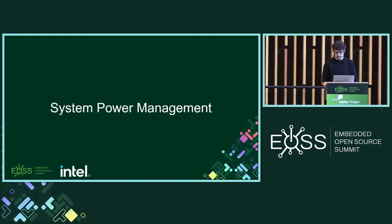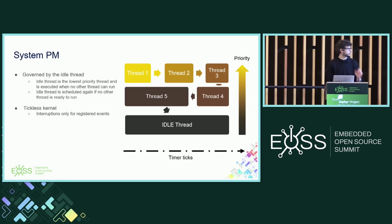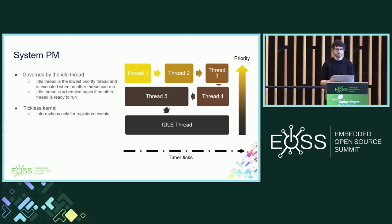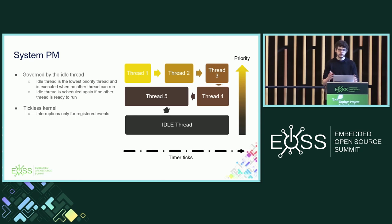Let's start with system power management. To understand it, we first have to talk a bit about the scheduler and the idle thread. The scheduler is the main power management governing entity — it knows when the next event will happen and consequently knows when to start doing power management. The Zephyr scheduler is a priority-based scheduler with an optional round-robin time slicing, which means it will run high-priority threads first.